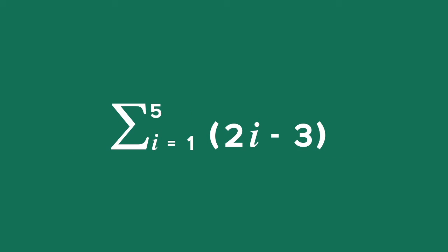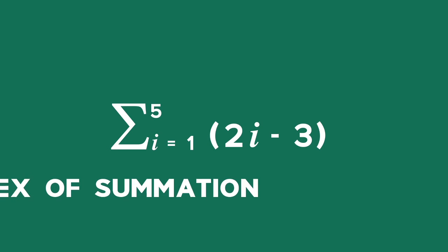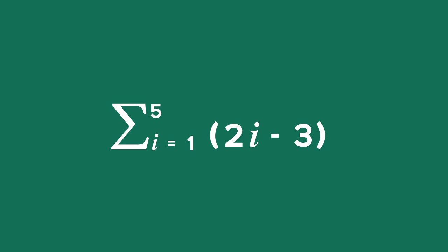There is usually a link between the variable under the sigma sign, i in this case, and the variable in the general term. In this example, i is called the index of summation. To expand the expression, we start by replacing i with 1 and increase by 1 each time until we reach the end value, which is 5 here.